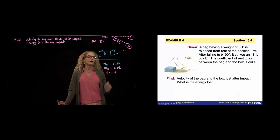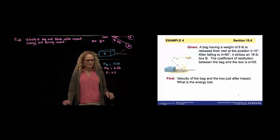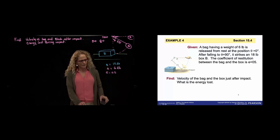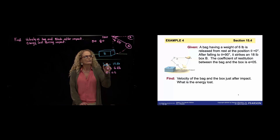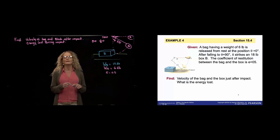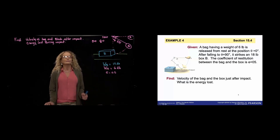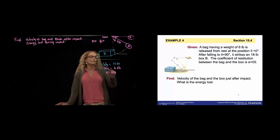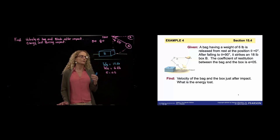They give us the mass of the block, which is 18 pounds — actually, that's a weight, not a mass. Remember that for US customary units, the weight is a base unit and the mass is a derived unit. In the case of international units, that's the contrary. So we have the weight of the block, the weight of the bag, and the coefficient of restitution, which describes the type of impact.